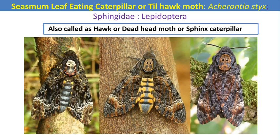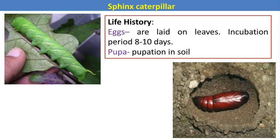The next pest is the sesame looping caterpillar, also called the sphinx caterpillar, tomato hawk moth, or death's head moth. The scientific name is Acherontia styx. It is a Lepidopteran pest. After mating, the female moth lays eggs on the surface of the leaves. The caterpillar emerges and is a very voracious feeder. One morphological characteristic of this caterpillar is a hook-like structure on the eighth abdominal segment. After development, the caterpillar goes into pupation, which occurs in the soil.